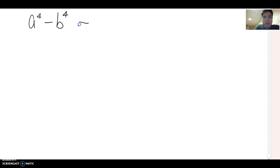Can I rewrite this? a square to the square minus b square to the square. Yeah, basically 2 times 2 becomes 4. So this becomes a to the fourth power and then this becomes b to the fourth power.